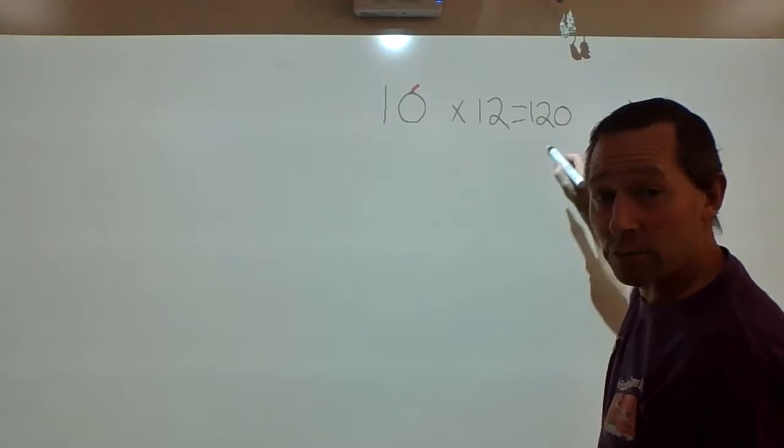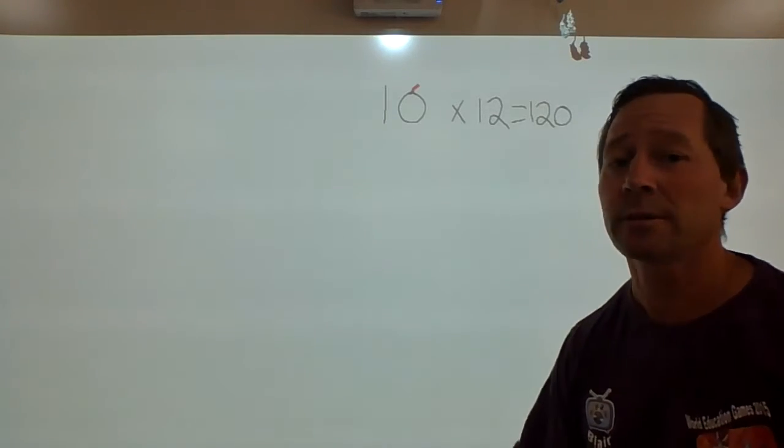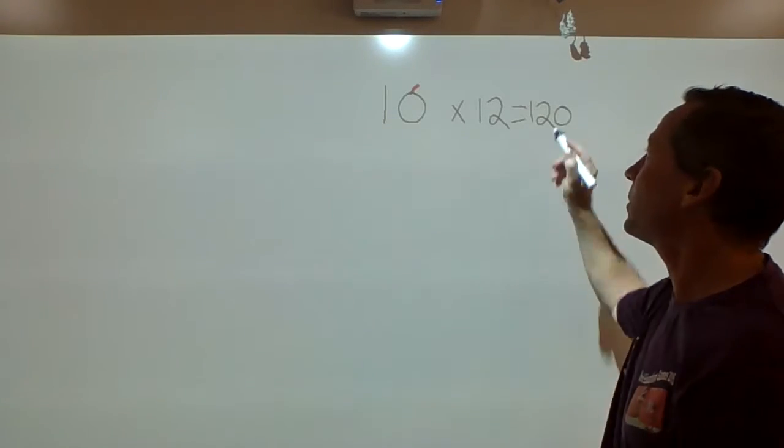So we don't just put a zero on the end. We need to know why we do it. Because we're multiplying by 10, we put that on the end.